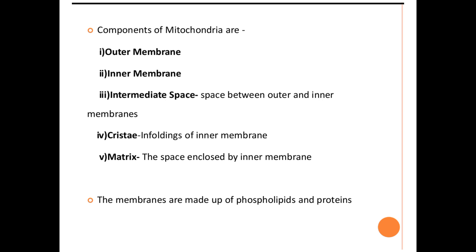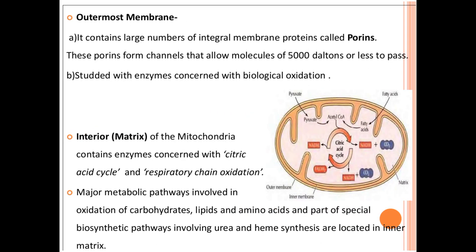The membranes are made up of phospholipids and proteins. The outermost membrane contains a large number of integral membrane proteins called porins. These porins form channels that allow molecules of 5,000 daltons or less to pass through the membrane. The outer membrane also contains enzymes concerned with biological oxidation, so the enzymes present in the outermost membrane help carry out biological oxidation.